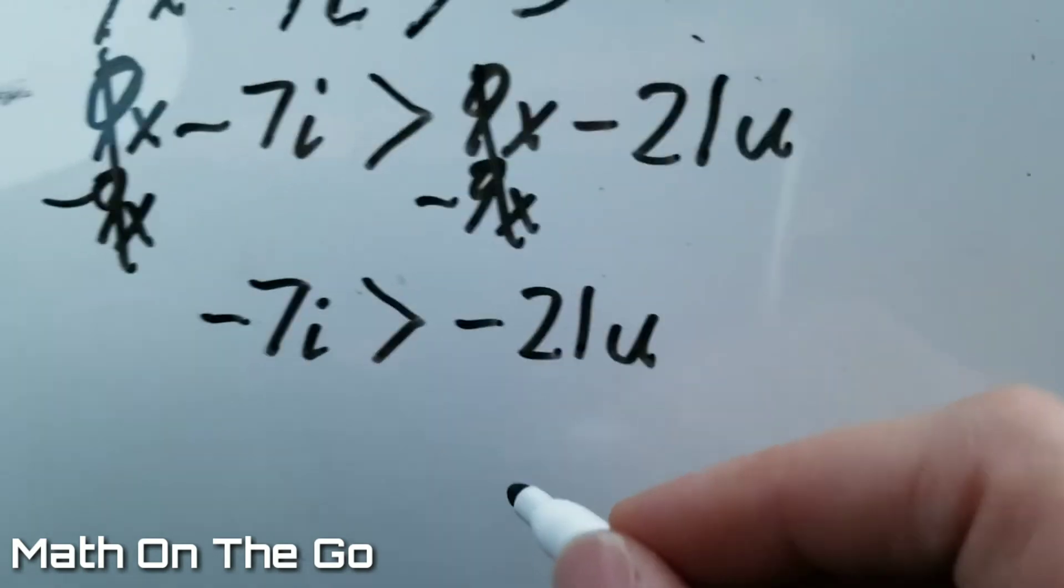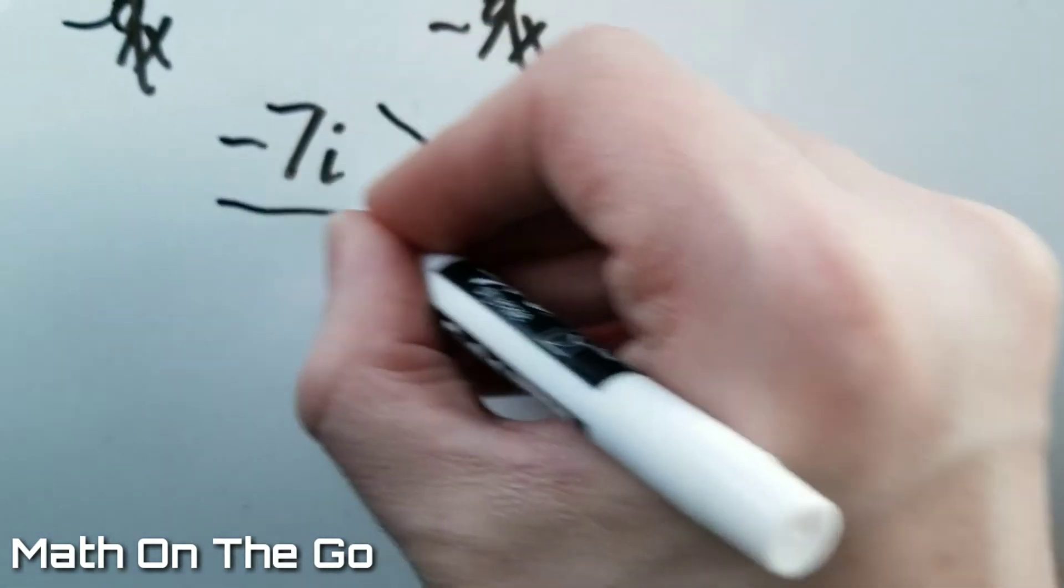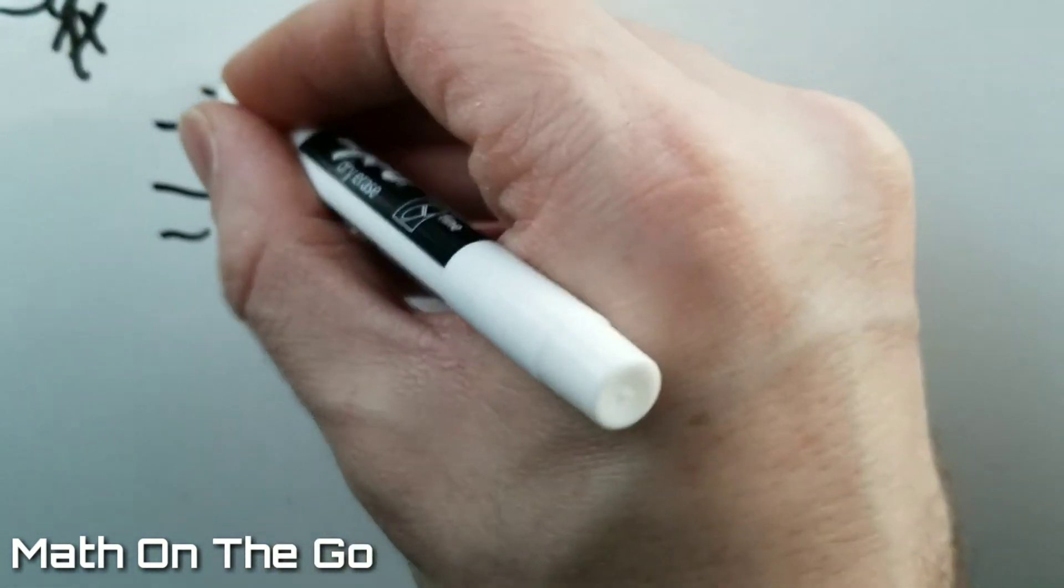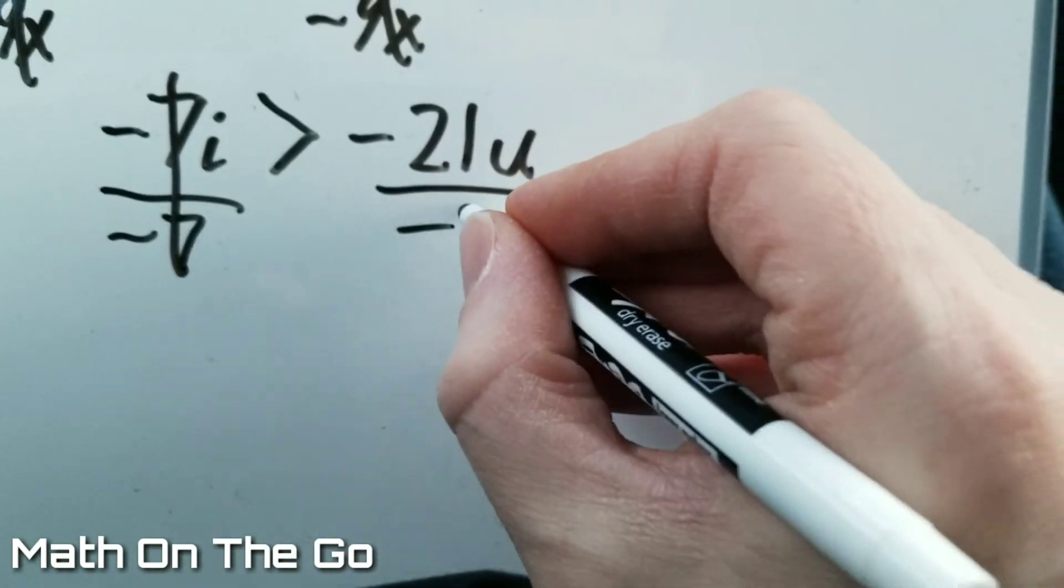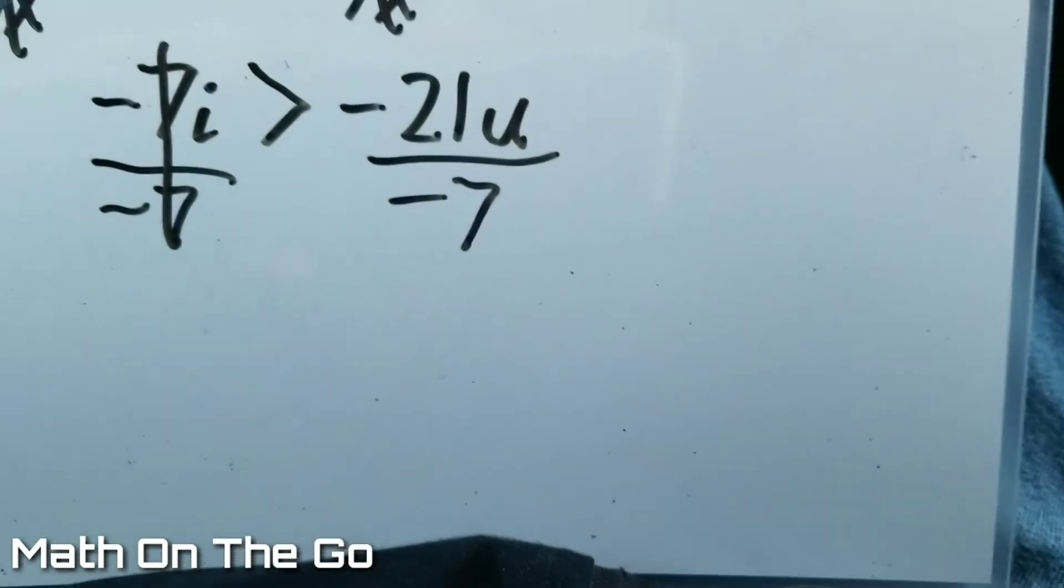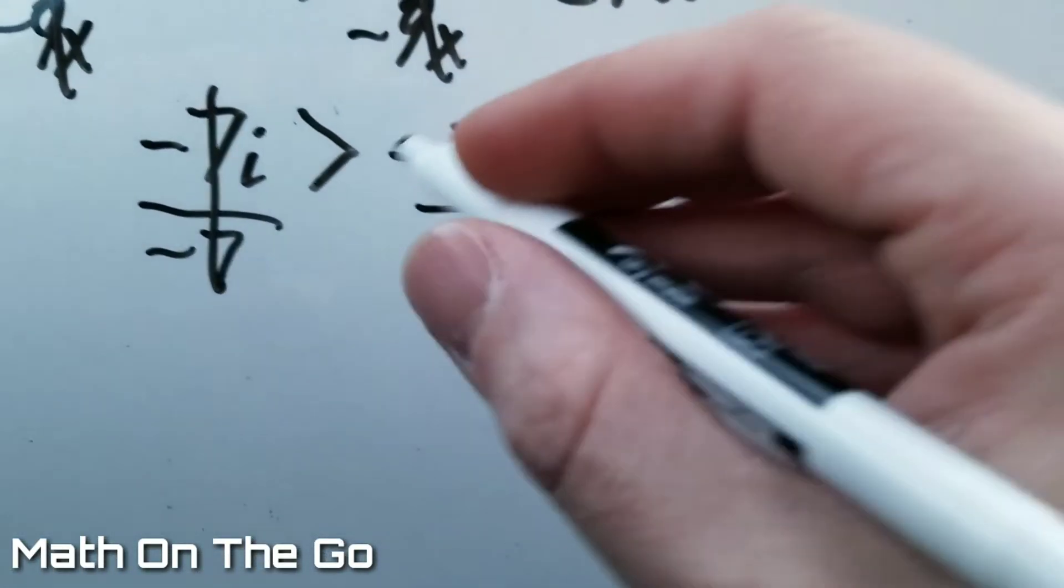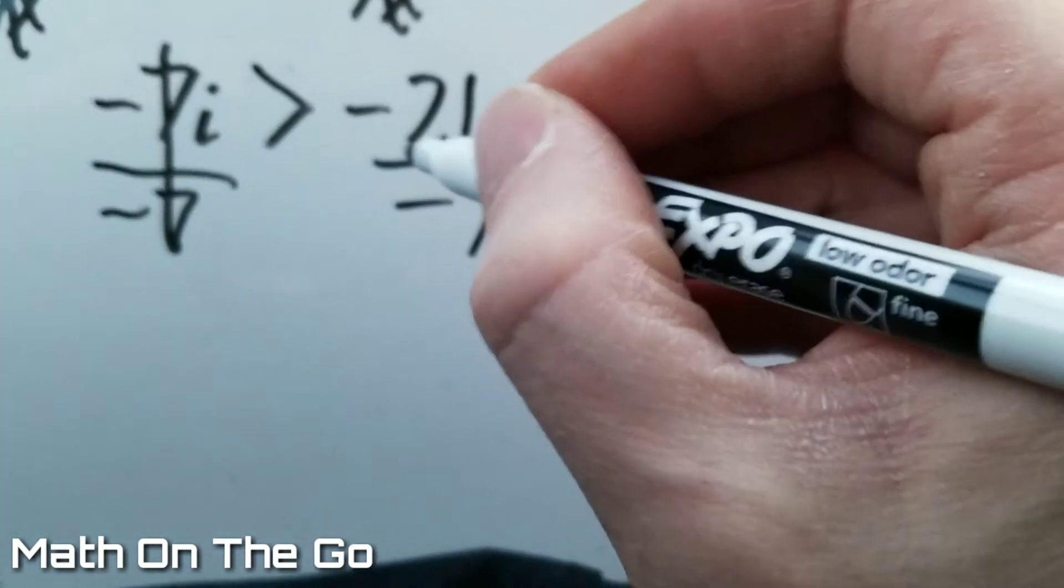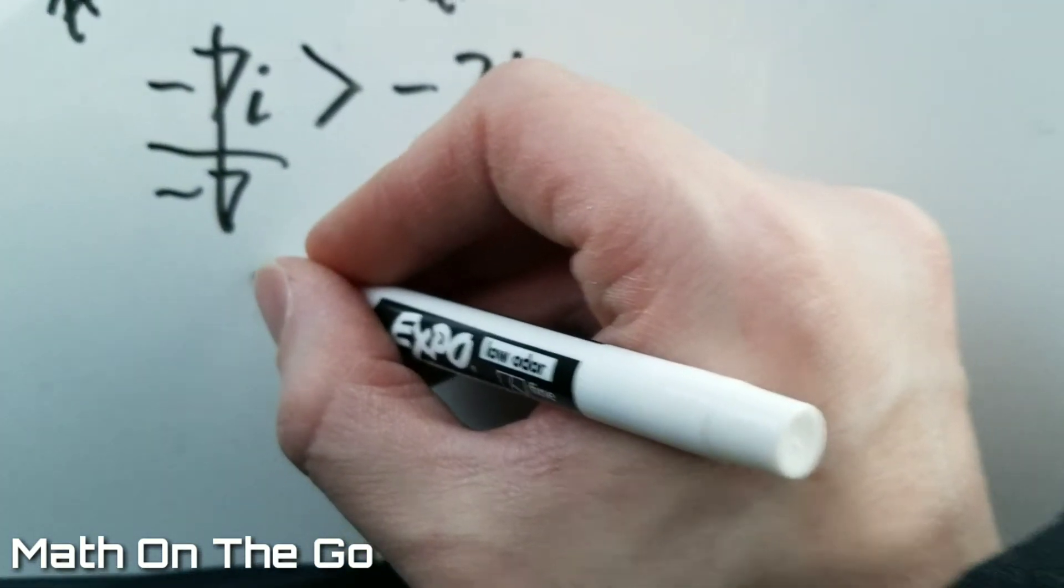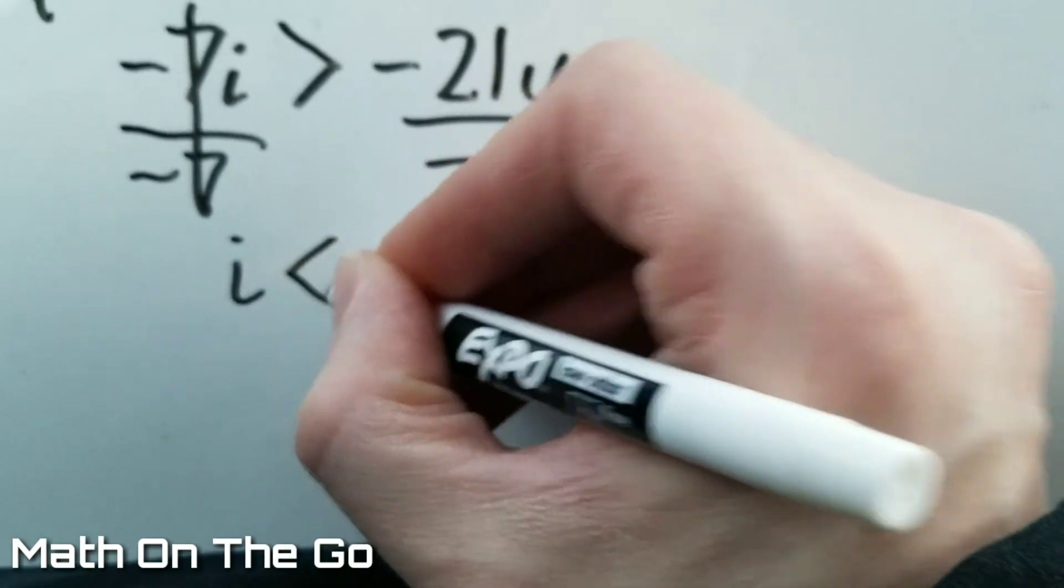Now what we're going to do is we are going to divide by negative 7. So when you divide by a negative across an inequality, you flip the sign. So that leaves us with i is less than 3u.